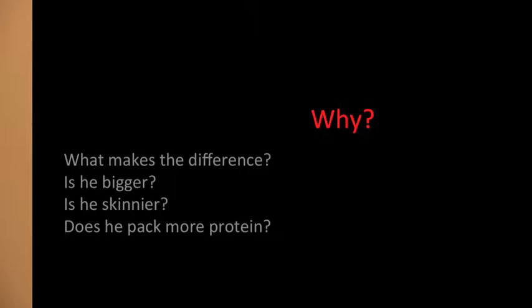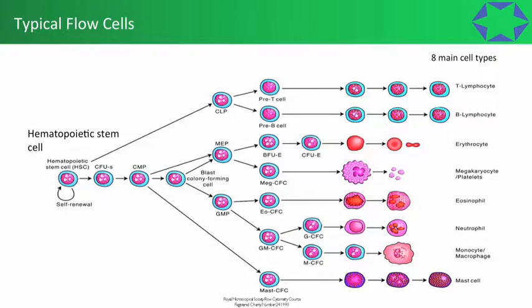Why do cells have individual characteristics — are they bigger, skinnier, do they have more protein? We want to understand these details so we can clearly resolve the biological situation we're interested in. This is now a classical slide showing that population compartments are very false — there are multiple sub-compartments within them. Cells are on a journey, and we get a snapshot through flow cytometry of that journey they are undertaking.